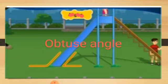This picture shows an obtuse angle. We see angles between the ground and the slide.